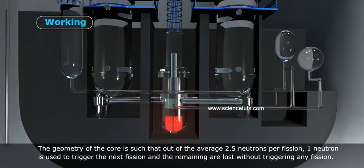The geometry of the core is such that out of the average 2.5 neutrons per fission, one neutron is used to trigger the next fission and the remaining are lost without triggering any fission.